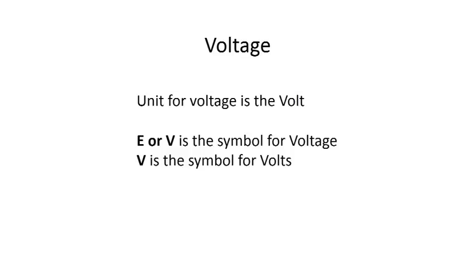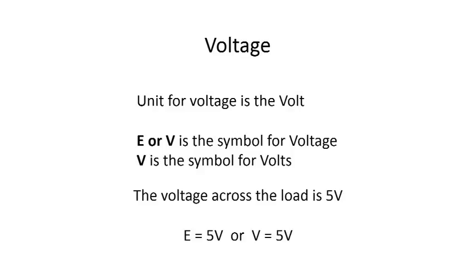Next is voltage. The unit for voltage is the volt. E or V is the symbol for voltage, and V is the symbol for volts. You could say the voltage across the load is 5 volts, or you could write it as E equals 5V or V equals 5V — either or.